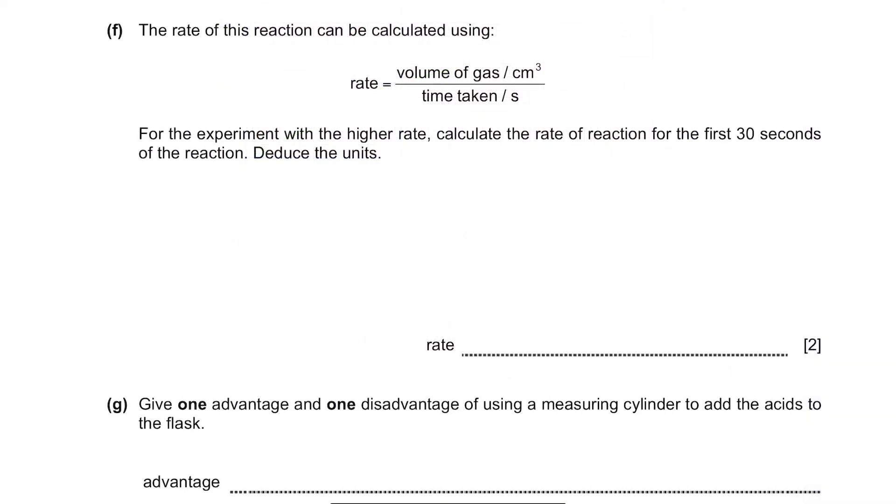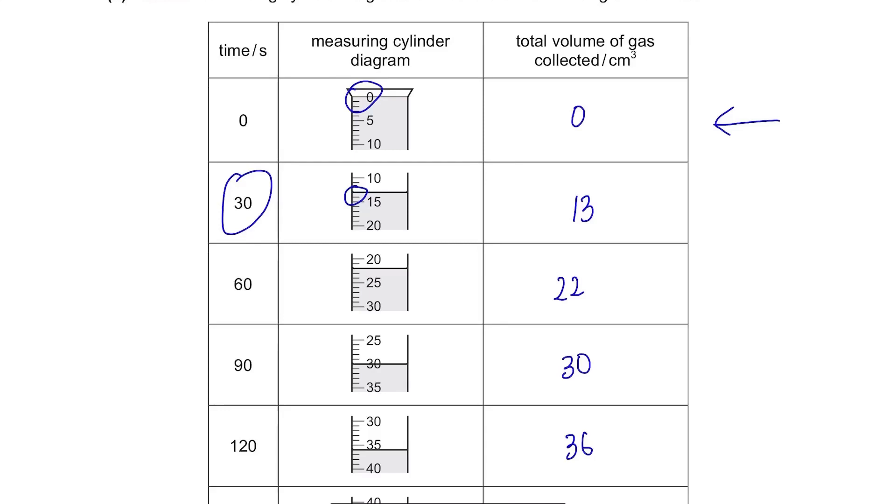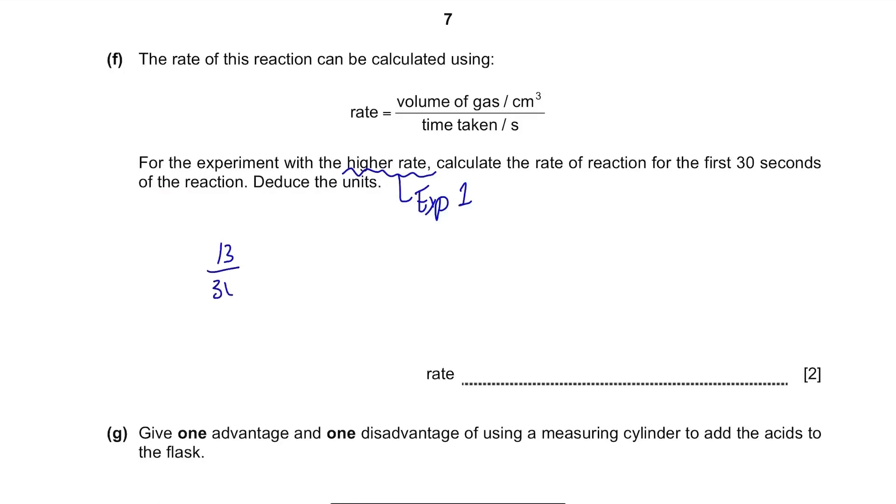Part F. The rate of this reaction can be calculated using this formula, volume divided by time taken. For the experiment with the higher rate, calculate the rate of reaction for the first 30 seconds of the reaction. Deduce the units. The question said experiment with the higher rate so it's about experiment 1. Going back to our table, for the first 30 seconds, 13 cm³ of gas was produced. So it's 13 divided by 30 which is 0.43. The unit should be cm³ divided by s written in this way.